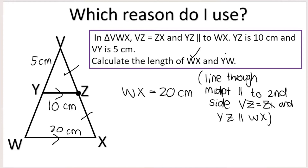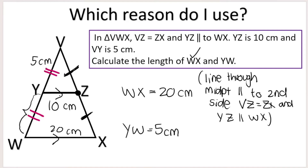Then they want me to calculate the length of YW. We were given the midpoint of one side, so we know that VZ equals ZX. We also know that YZ is parallel to WX. Because of that, we can conclude that YW is also equal to five centimeters, because Y is therefore the midpoint of that line as well. We know this because of the same theorem — line through midpoint parallel to second side — and because of those given bits of information.